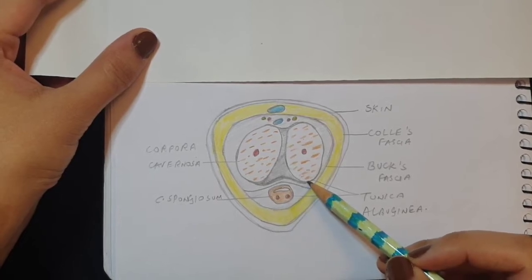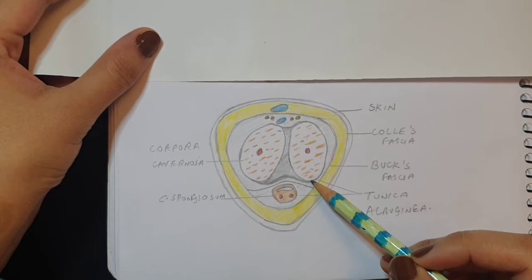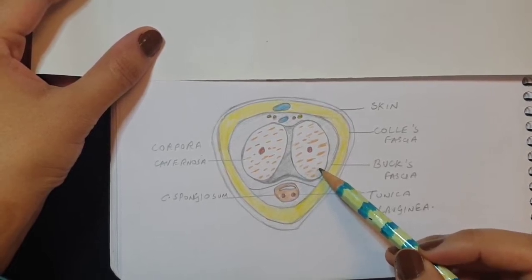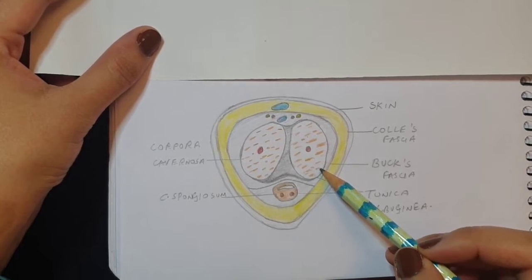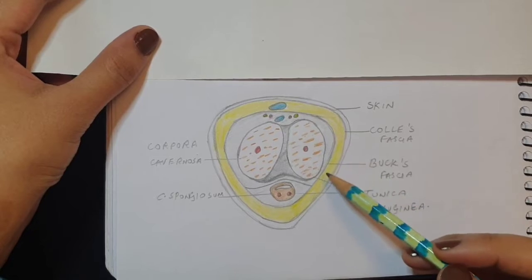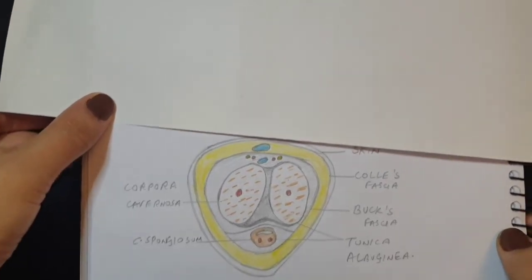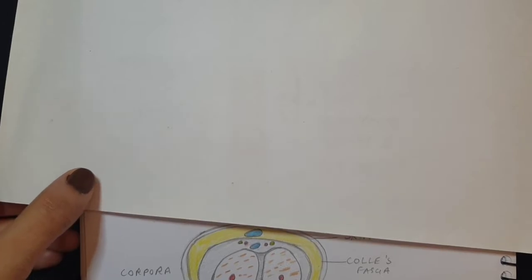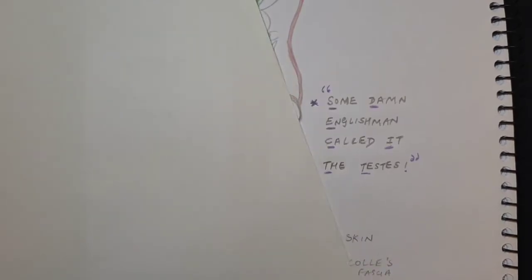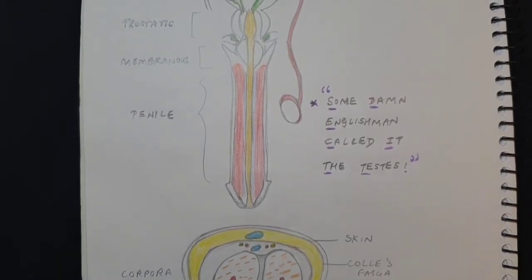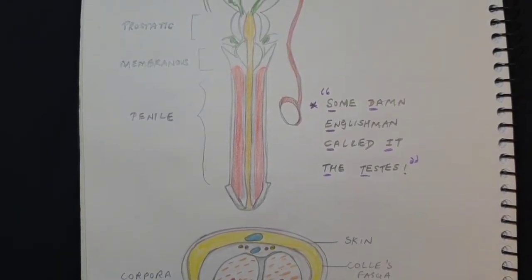The tunica albuginea surrounding the corpora cavernosa is also very important for erectile function — when distension occurs because of filling of blood vessels during erection, the tunica albuginea helps form a layer outside and contains the blood within. All these layers are very important because when you see the description for surgical treatment of hypospadias, you have to borrow a lot of layers from surrounding structures. You have to do waterproofing and a three-layered repair, which is where knowing all the available layers becomes essential.